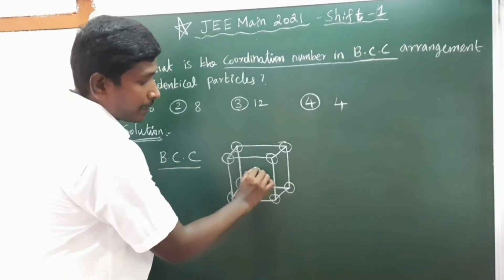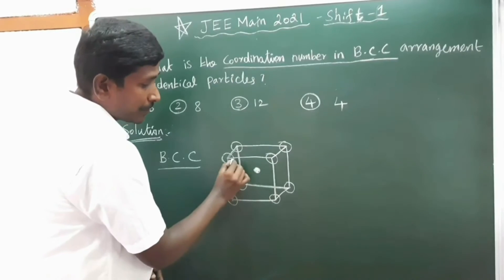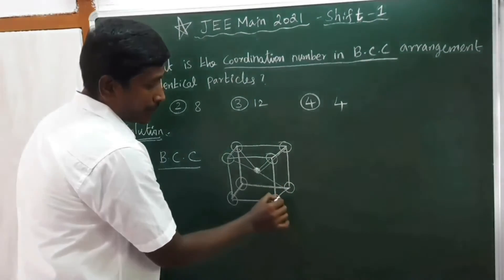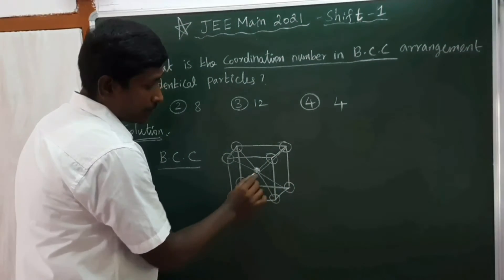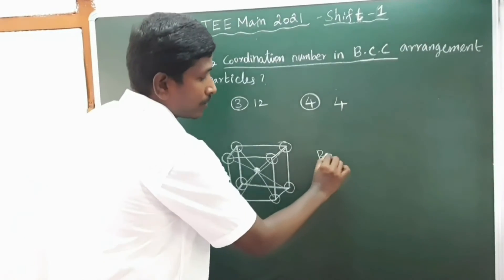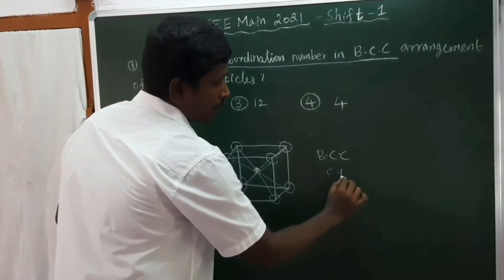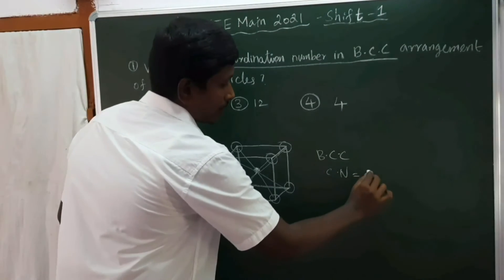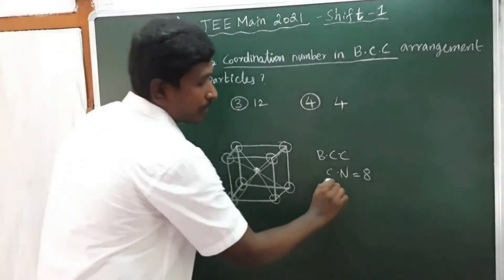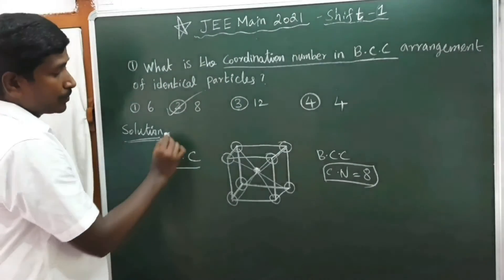For the center atom in BCC, 8 atoms are touching it — those are the nearest atoms. So the coordination number in BCC is 8. So the answer is option 2.